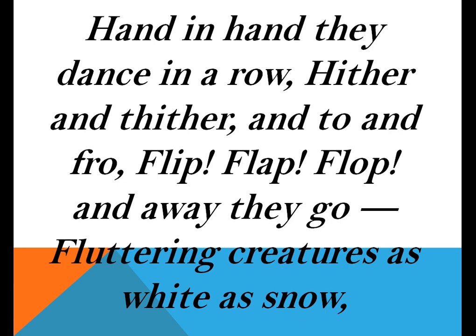Fluttering creatures as white as snow. In this poem the poetess describes the clothes which are hung to dry on the clothes line outside the house in an open area. She says that the clothes on the clothes line seem to dance because of the breeze.